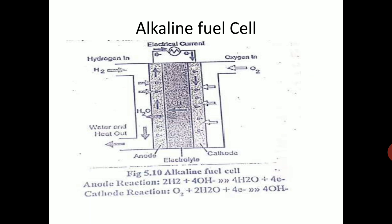Now look at this alkaline fuel cell diagram. On the left, hydrogen comes in from the top and exits from the bottom as water and heat. On the right side, oxygen comes in. The hydrogen electrons flowing from the anode to the cathode constitute the current — you can see electrons flowing from anode to cathode, and thus electricity is produced.